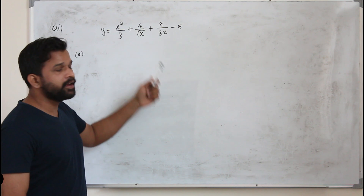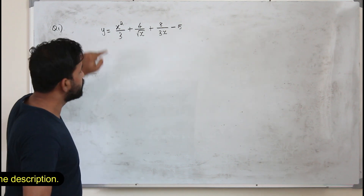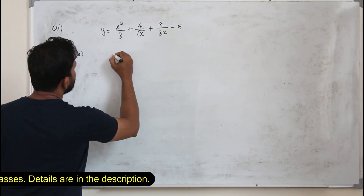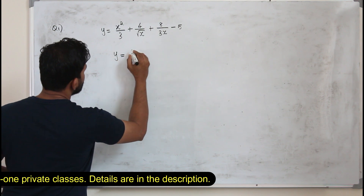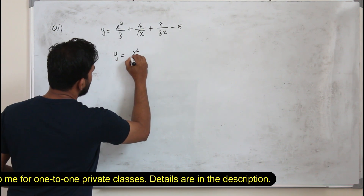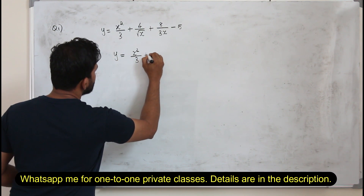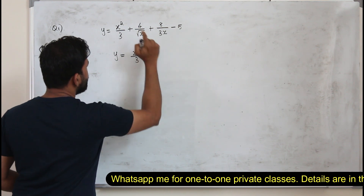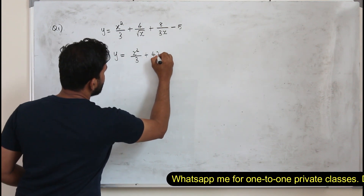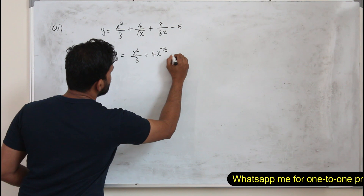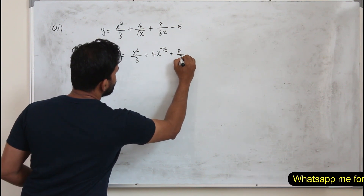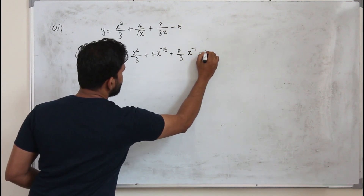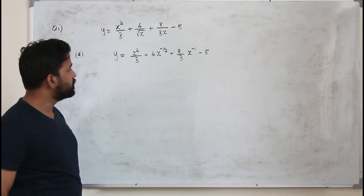Here, they want you to find the first derivative of y with respect to x. Before differentiating, we can write this function in the form x squared over 3 plus 4x to the power minus half — bringing it to the numerator — plus 8 over 3 written as x to the power minus 1. This will make it easy for us to differentiate.